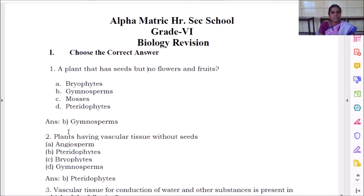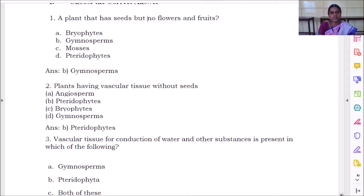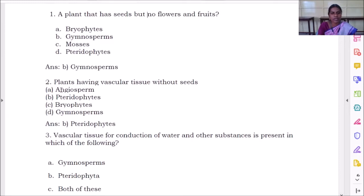The answer is gymnosperms. Plants having vascular tissue without seeds. It is from pteridophytes.